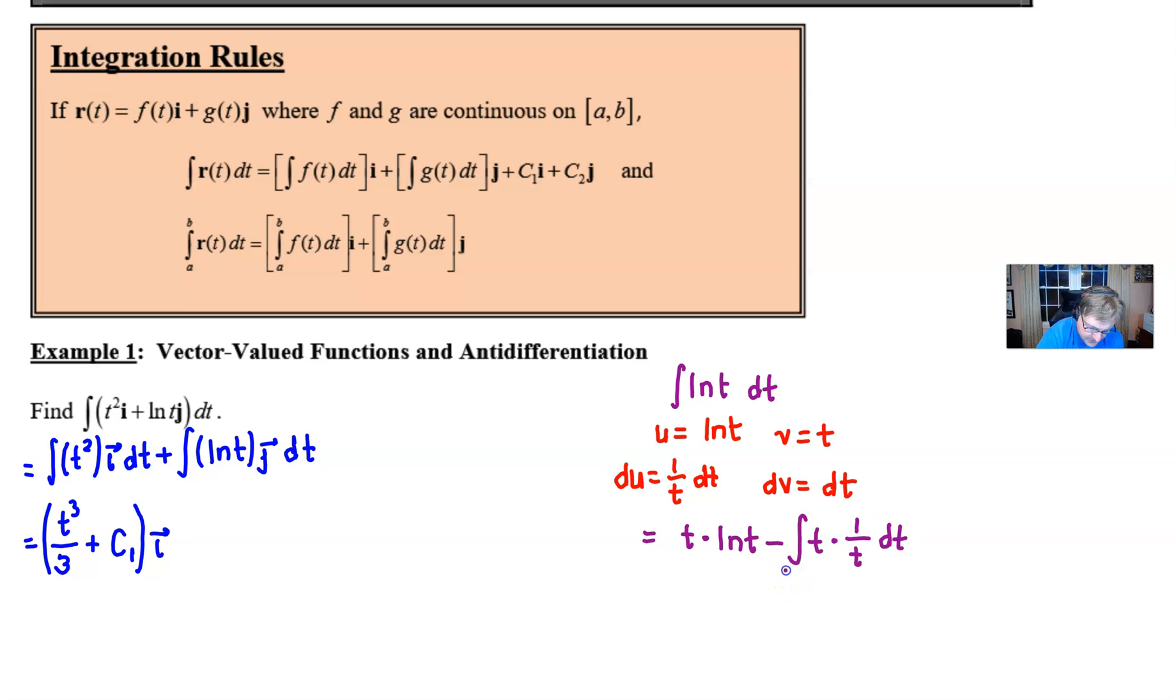Well, the v multiplied by the du is just the integration of 1 with respect to t, which of course is going to give us t.